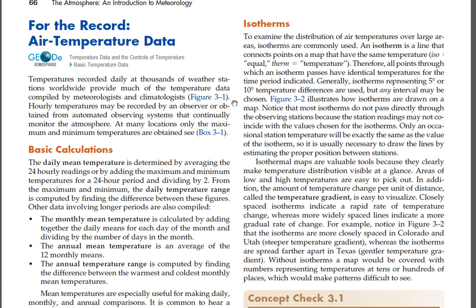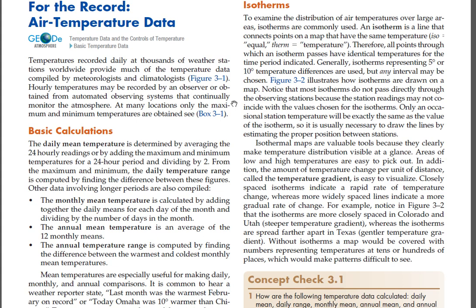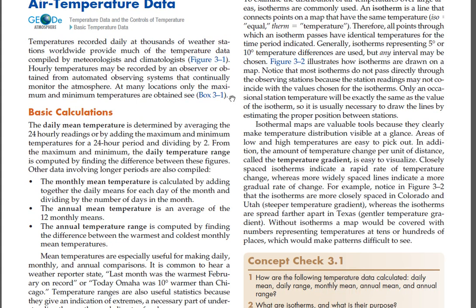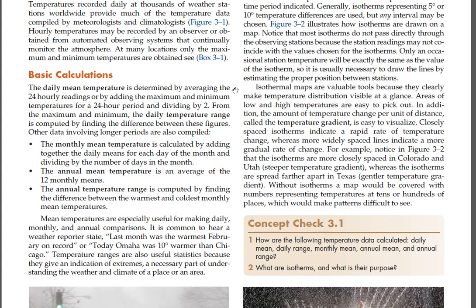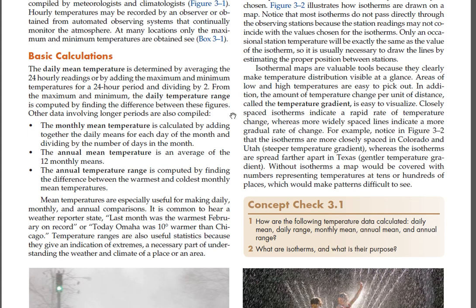Notice that most isotherms do not pass directly through the observing stations because the station readings may not coincide with the values chosen for the isotherms. Only an occasional station temperature will be exactly the same as the value of the isotherm, so it is usually necessary to draw the lines by estimating the proper position between stations. Isothermal maps are valuable tools because they clearly make temperature distribution visible at a glance. Areas of low and high temperatures are easy to pick out. In addition, the amount of temperature change per unit of distance, called the temperature gradient, is easy to visualize.